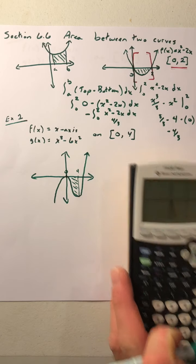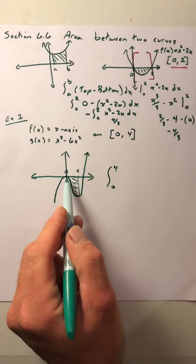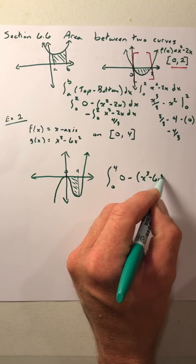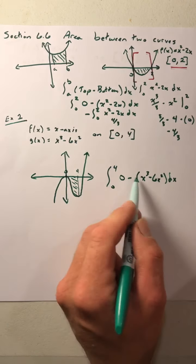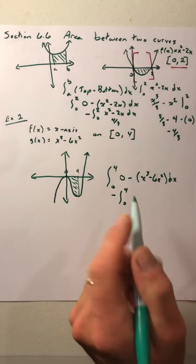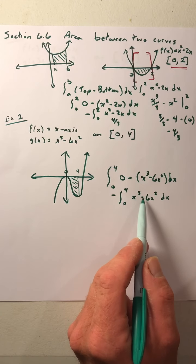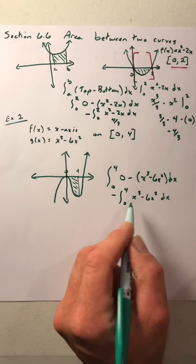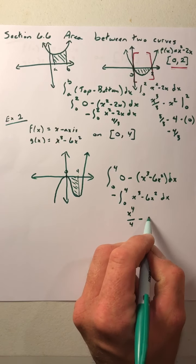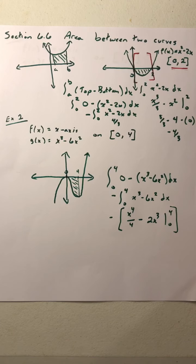So in order to get that positive area, we're going to integrate from 0 to 4 of the top curve, which in this case is the x-axis — so 0 — minus the bottom curve, which is x³ - 6x². 0 minus anything is the negative of that, so we can take the negative out of our integration. If you want to multiply that negative in, you can do that as well — either way is acceptable. I like to pull that negative out myself. So we're integrating the negative of the integral from 0 to 4 of x³ - 6x² dx.